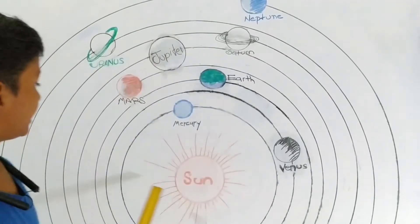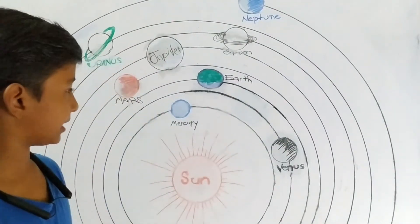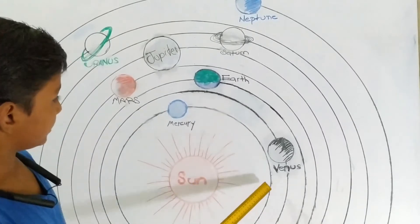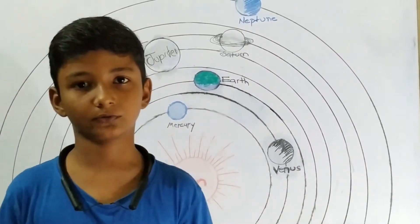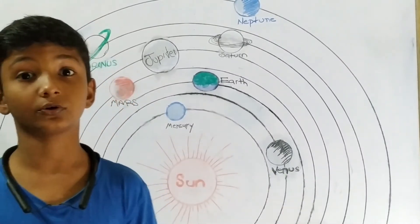The next planet from the Sun is Venus. Its size is similar to Earth's size. Venus is the hottest and brightest planet in our solar system because its thick atmosphere traps a large amount of solar energy.